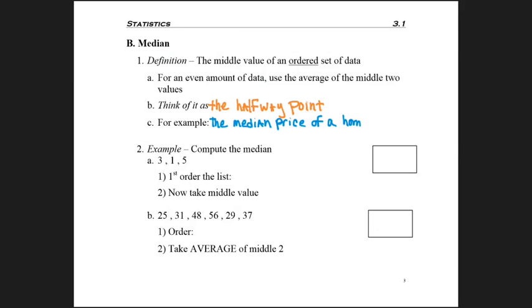For example, the median home price of a home is $175,000. That means half of all homes cost less and half of all homes cost more. So that middle point divides our data.